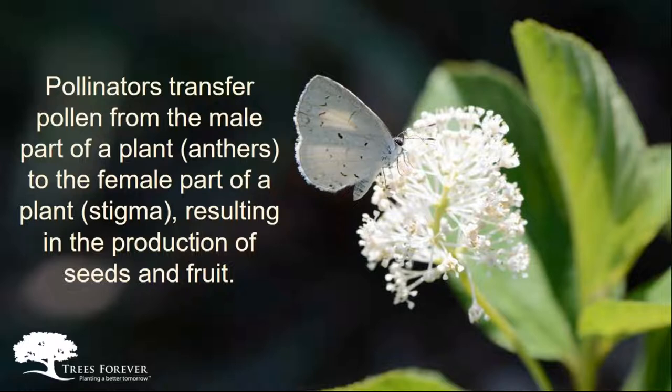Since we're talking about pollinators, it's worth remembering what the act of pollination actually entails. Pollinators transfer pollen from the male part of the plant — the anthers — to the female part of a plant, the stigma, resulting in the production of seeds and fruit.